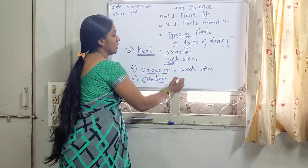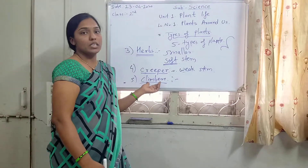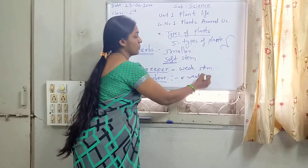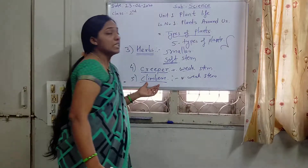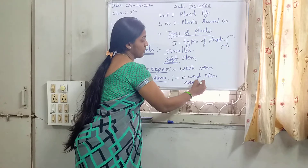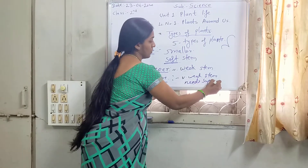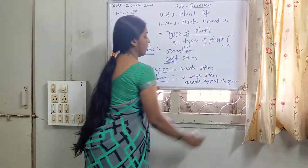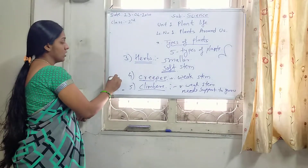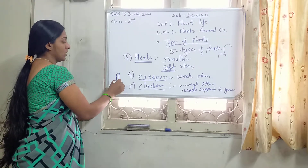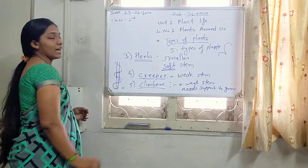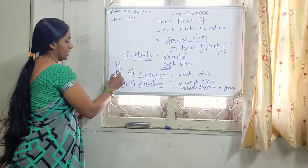What is a Climber? The meaning is in the word — it climbs. Climbers also have a very weak stem and need support to grow. We have to provide support and they climb on that support. For example, if this is a stick we are providing, the plant grows along that support. The example is Money Plant.